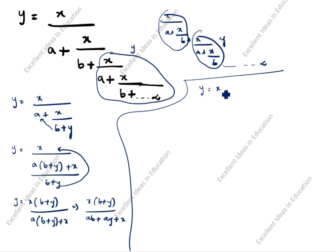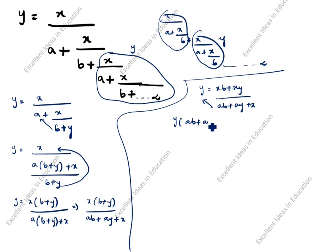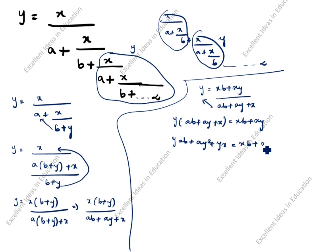So y equals (xb + xy) divided by (ab + ay + x). Cross-multiplying: y times (ab + ay + x) equals xb + xy. Expanding inside the bracket: y·ab + ay² + y·x equals xb + xy. The terms y·x and x·y cancel, leaving: y·ab + ay² equals xb.